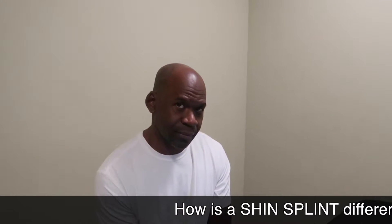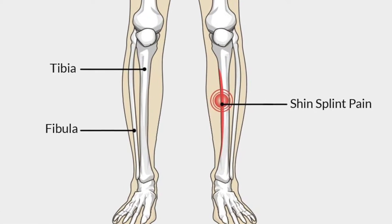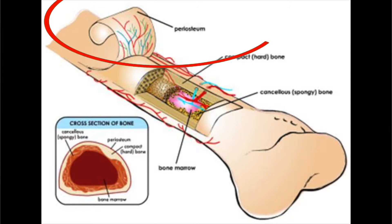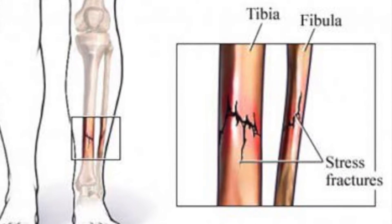How is a shin splint different from a stress fracture? A shin splint is an inflammation of the periosteum of the bone — the periosteum is the covering of the bone. A stress fracture, on the other hand, is an injury of the bone itself — that's a subacute fracture. So one is an injury of the covering of the bone, the other is an injury to the bone itself.